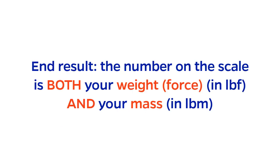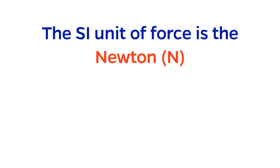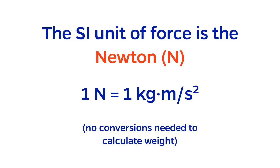So, this system isn't completely silly. The number on the scale is both the force in pound force and your mass in pound mass. In contrast, the SI unit for force, the Newton, is defined to equal one kilogram meter per second squared. There is no unit conversion needed here, which I find much more intuitive and easier to understand.